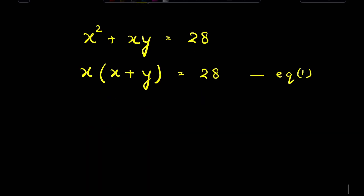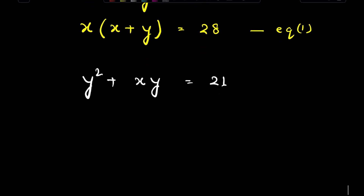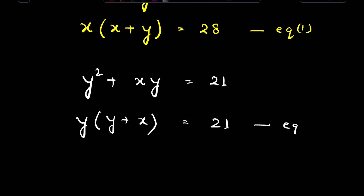Then we have y squared plus x times y is equal to 21. Here we can take y common and write y(y + x) = 21. Let this be equation 2.